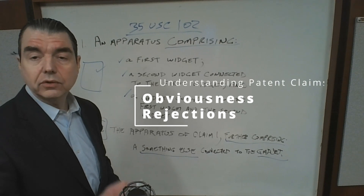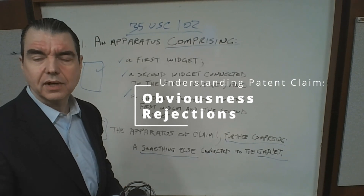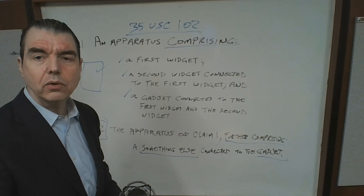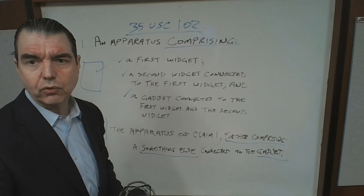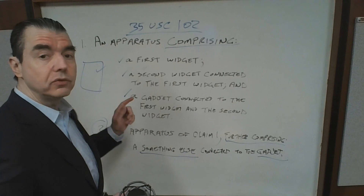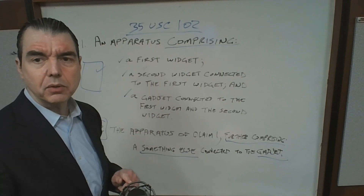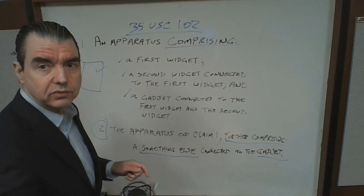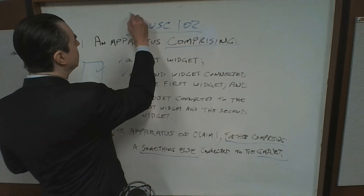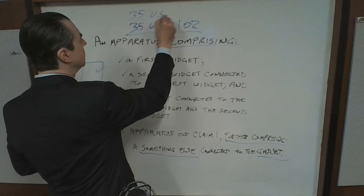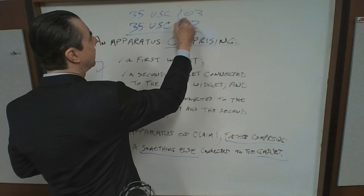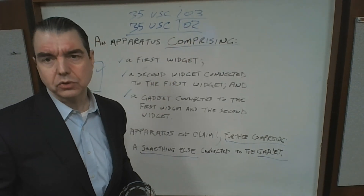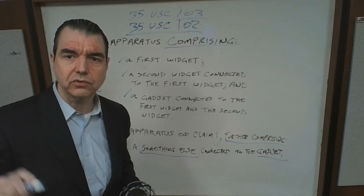There's another type of rejection the examiner can make: obviousness. An obviousness rejection is under 35 USC section 103 of the patent law. So novelty is under section 102, and obviousness is under section 103.